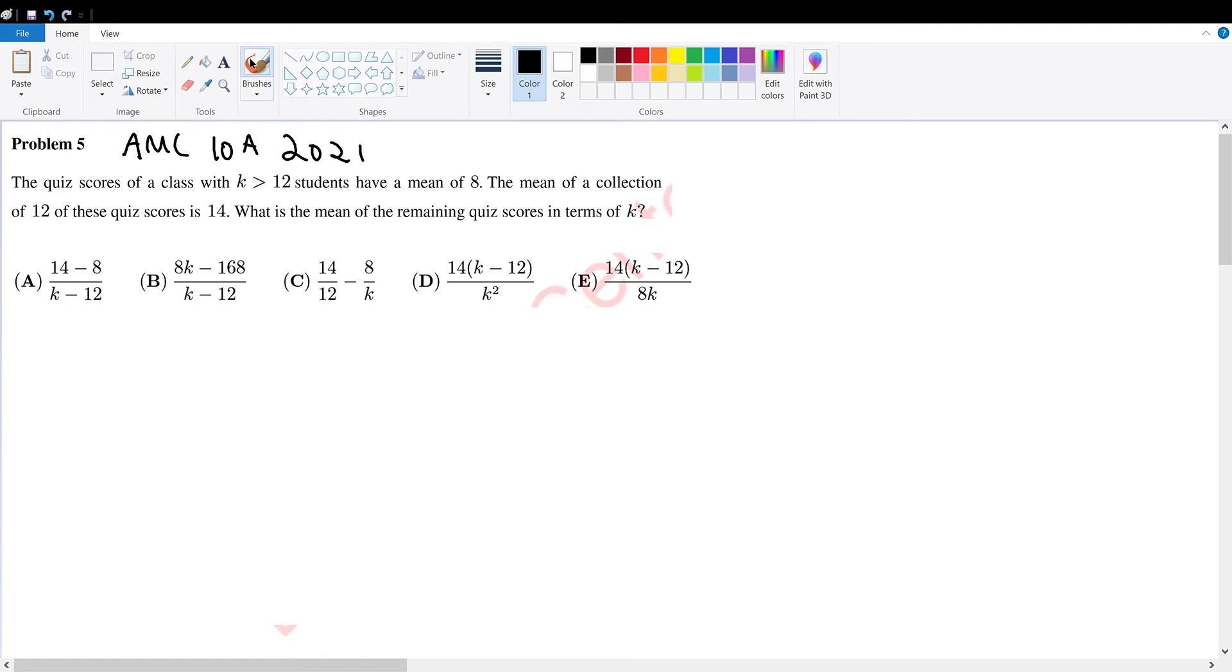AMC 10, 2021, problem 5. The quiz scores of a class where k is greater than 12 students have a mean of 8. The mean of the collection of 12 of these quiz scores is 14. What is the mean of the remaining quizzes in terms of k?